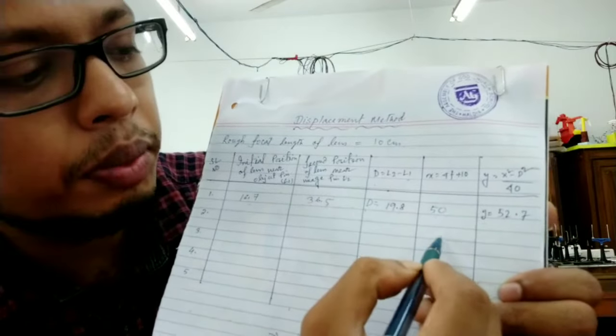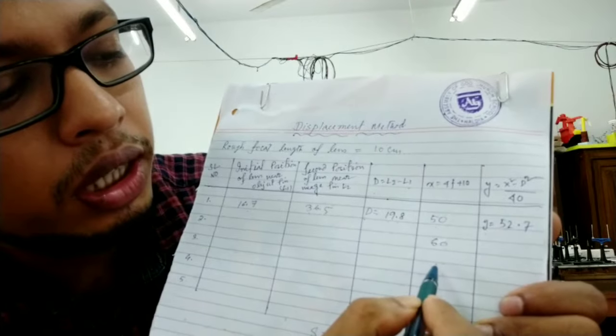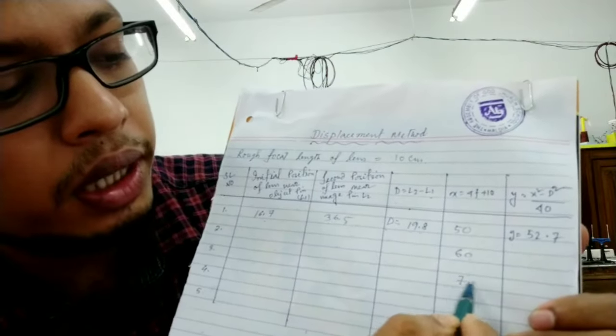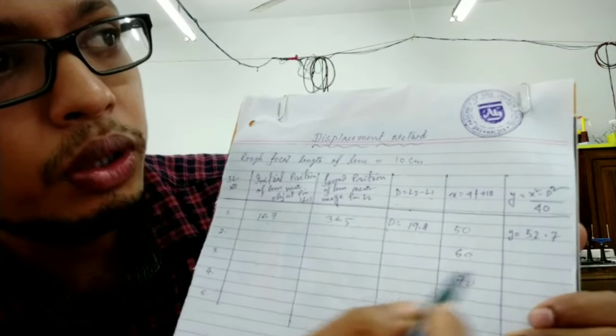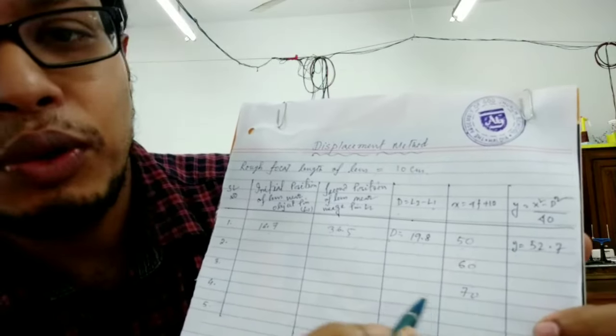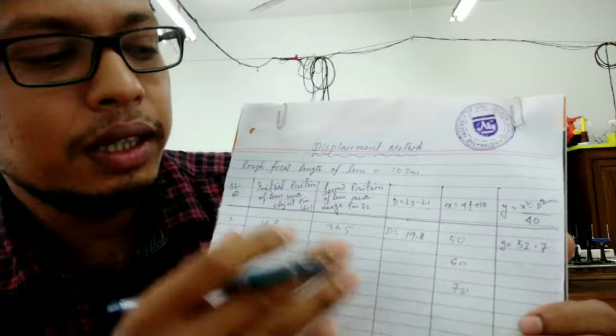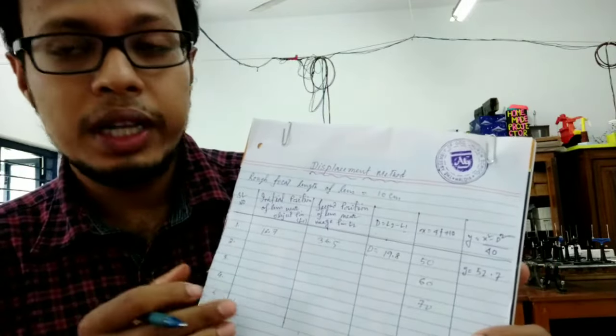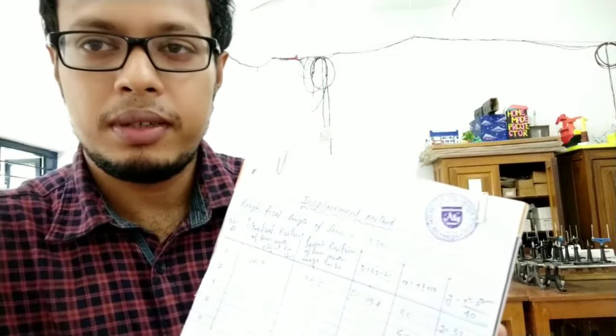And how to take the second reading, then just increase the value of X by 10 centimeter. Second will be 60, then take L1 and L2. Third one will be 70, then take L1 and L2. So this is how the value of Y will come. This is all about this practical, how to find the focal length of convex lens by the displacement method.